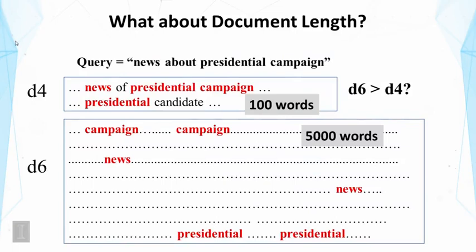So far in the lectures about the vector space model, we have used various signals from the document to assess the matching of the document with the query. In particular, we have considered term frequency — the count of a term in a document — and we have also considered global statistics such as IDF, inverse document frequency. But we have not considered the document length.